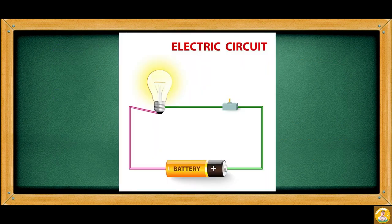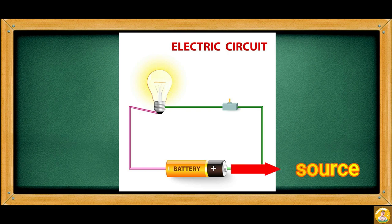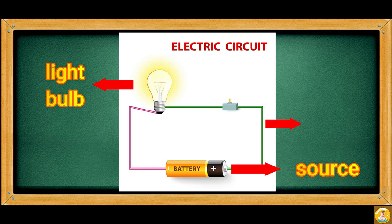Let's look at this picture. This is an electrical circuit. It has four parts: a source, which is a battery in this picture; a light bulb; wires; and a switch.